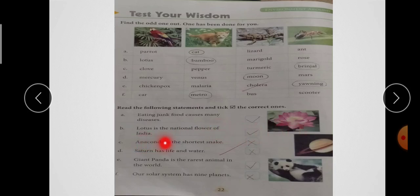Third है - Anaconda is the shortest snake. तो ये क्या है? Wrong. क्योंकि Anaconda जो है, ये largest snake का name है. D है - Saturn has life and water. तो ये क्या है? Wrong. क्योंकि Saturn के ऊपर ना ही पानी है और ना ही life possible है. E है - Giant Panda is the rarest animal in the world. तो ये क्या है? Correct. क्योंकि Giant Panda जो है, ये world का rarest animal है. Last है - Our solar system has nine planets. तो ये क्या है? Wrong. क्योंकि हमारे solar system में eight planets हैं.